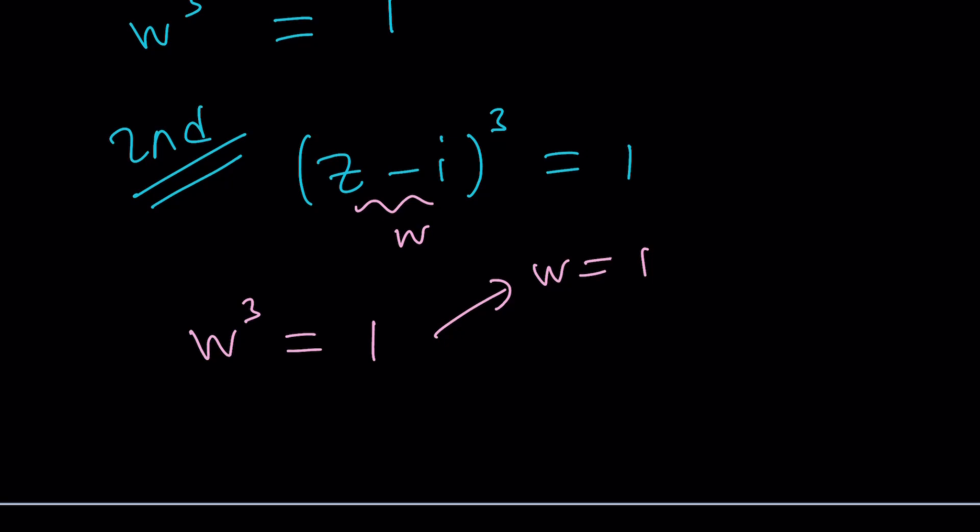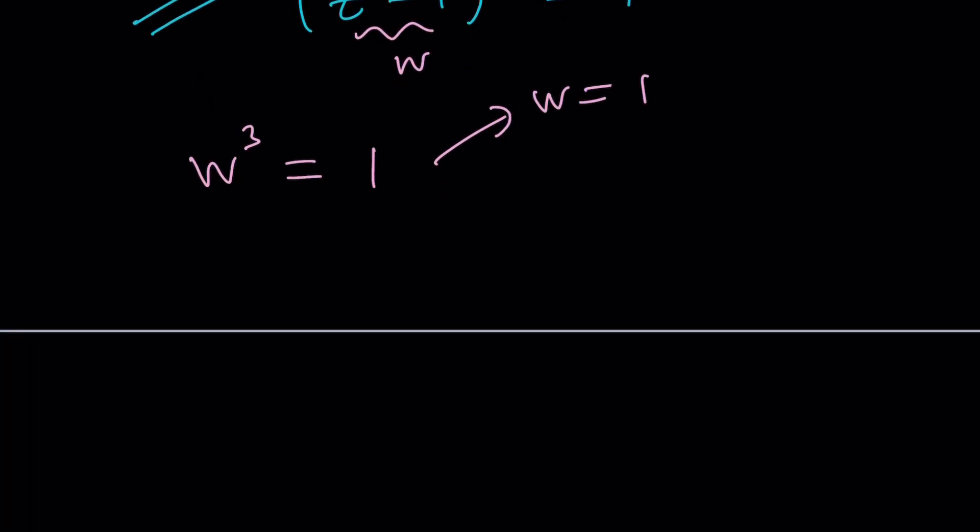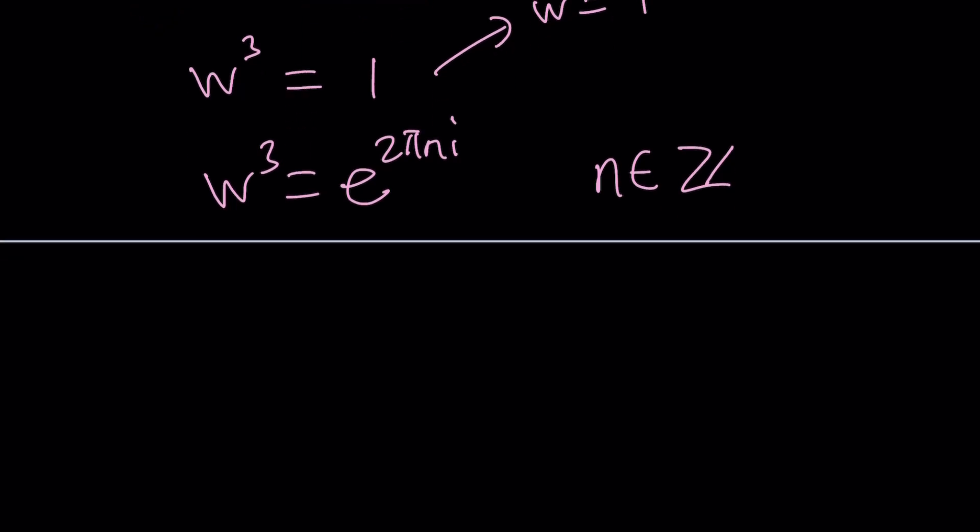You could go for the polar form. Let's go ahead and write 1 in polar form. And then I'll show you the alternative. So how do we put this in polar form? It's going to be e to the power 2 pi n i, n is an integer. And of course, there's no need to replace n with infinitely many values because we're looking for cube roots. And there's only three of them, because otherwise, they're going to repeat.